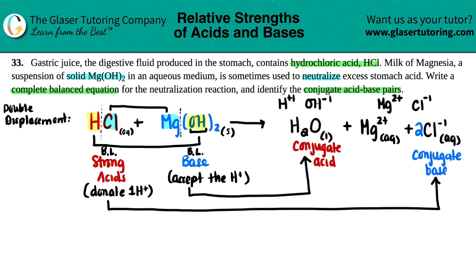Did I cover everything? The only thing missing is we didn't balance it. Every time you write an equation, you need to make sure it's balanced. I added a two in front of Cl⁻, so I need to balance the chlorines — there are two chlorines, so I put a 2 in front of HCl. And now I have to double up on the OHs and the Hs: two OHs and two Hs means I should have two H₂Os. So this is your final balanced equation with the conjugate acid-base pairs identified.